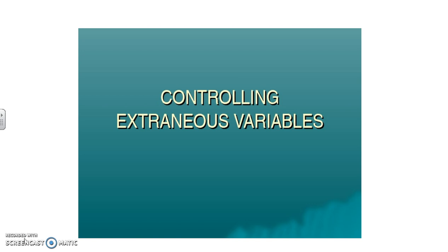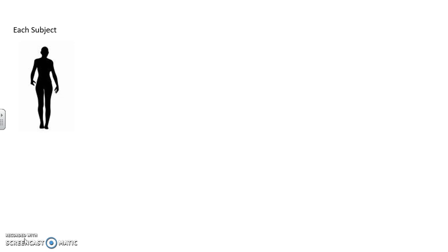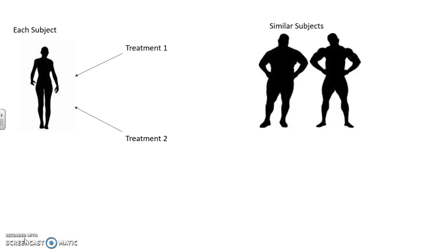As a result, we can do a matched pairs experimental design. Such a study usually assigns both treatments to each experimental unit or subject, or we can match two experimental units that are most alike in terms of any extraneous variables. In each of these designs, each individual person in the first one is considered a block, while the two similar subjects in the second one is also considered its own block.